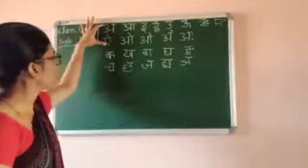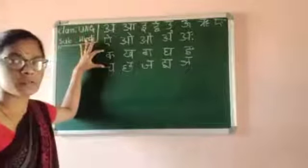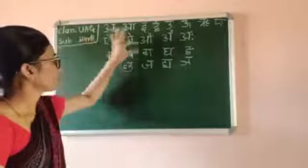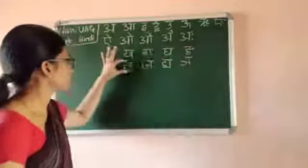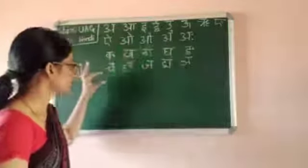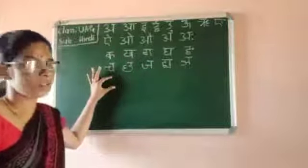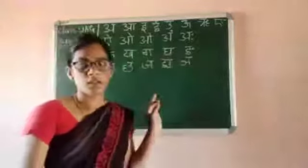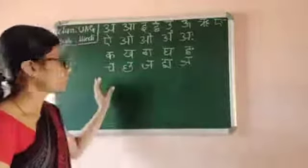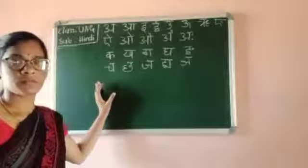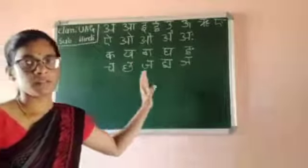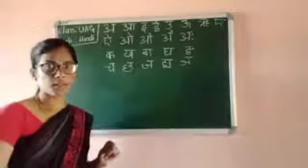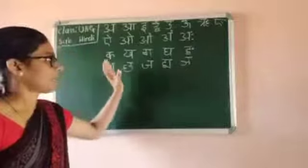Next letter, children. Next line: Kha, Gha, Cha, Jha. Next letter — Ta, Da, Dha, Na. I will tell one by one how to write in Hindi. Okay children, you read it and practice it.